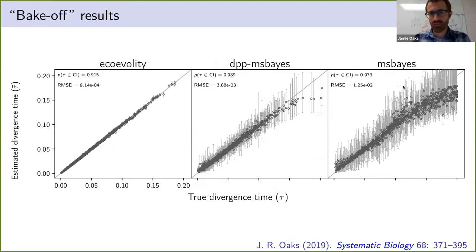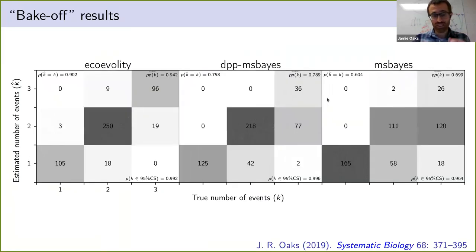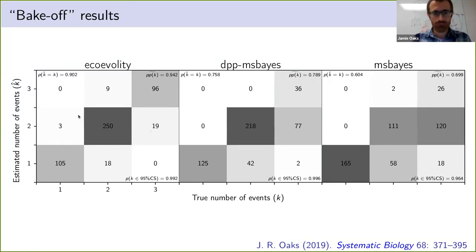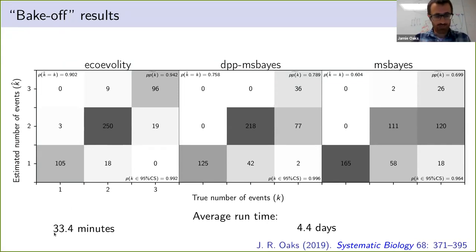Now let's compare this to the ABC approaches. Looking at true versus estimated divergence times, we're much more accurate and precise with our full likelihood Bayesian approach than these approximate methods. And the same is true for estimating divergence models: the ABC methods are very prone to lumping things together when they shouldn't be — even when the true number of events is three, they're very likely to estimate at least one shared divergence event. We're doing much better with our full likelihood Bayesian approach.